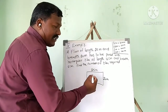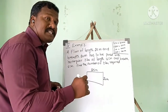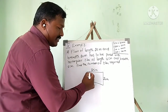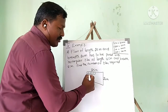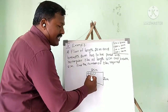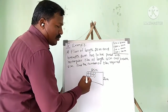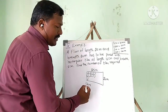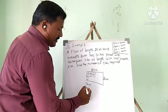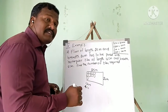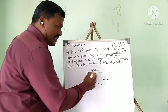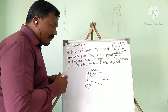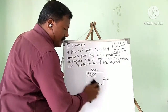We have to find out the area of the floor for the purpose of placing the tiles. The tiles have a length of 16 centimeters and a breadth of 5 centimeters. We need to find out how many tiles we require, so let me go through it step by step.